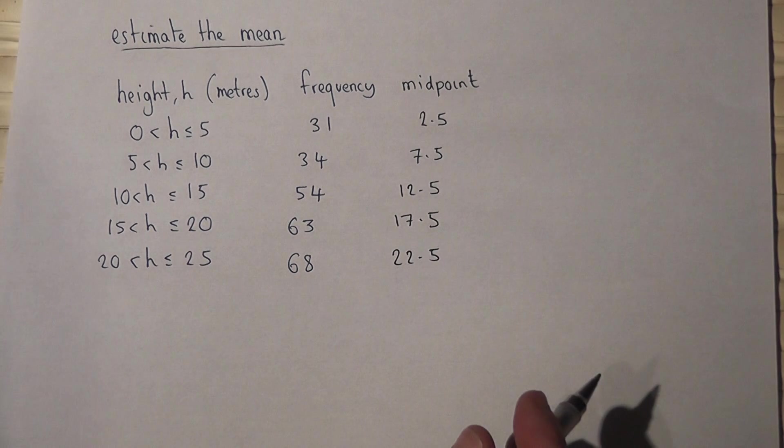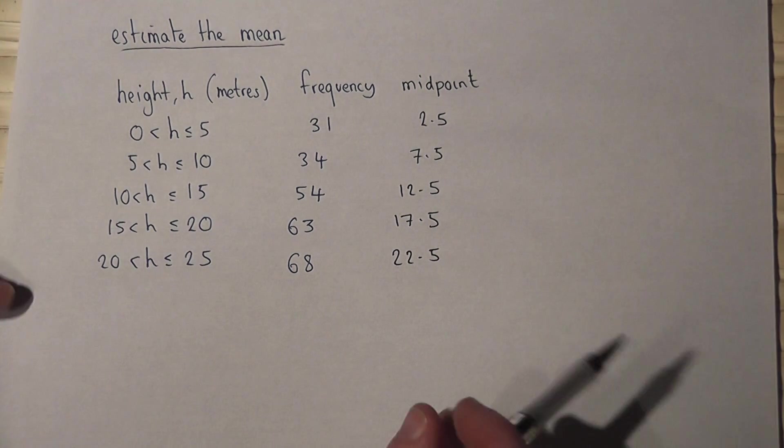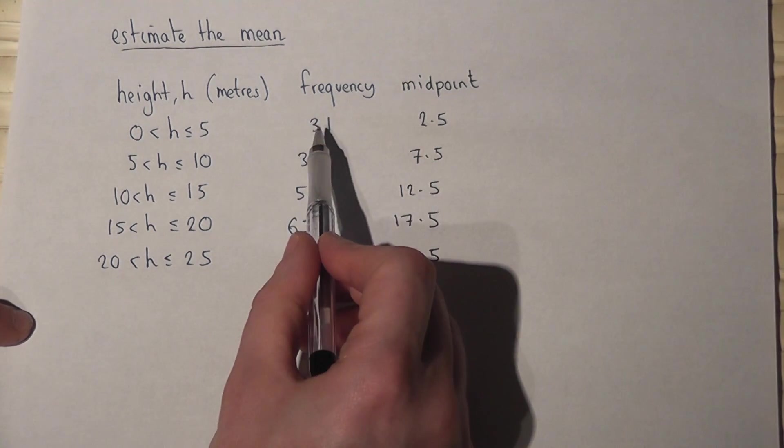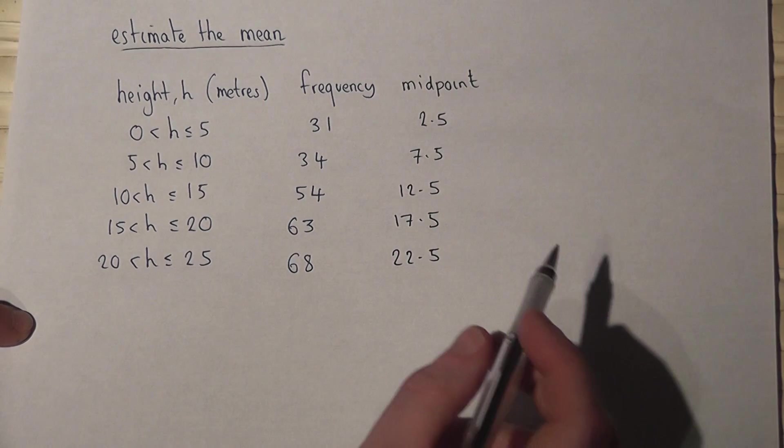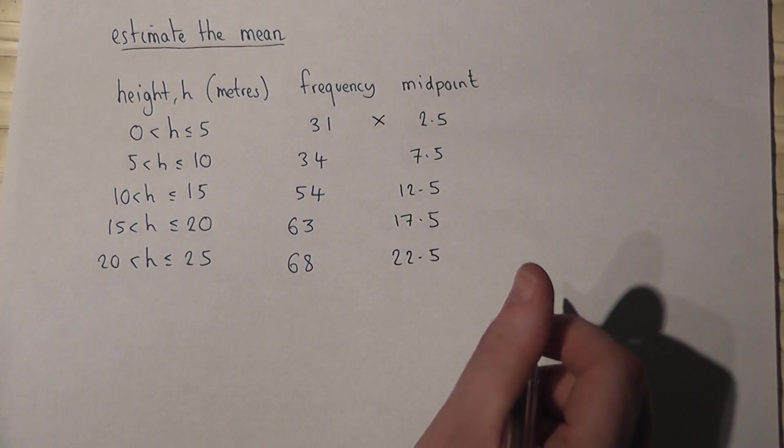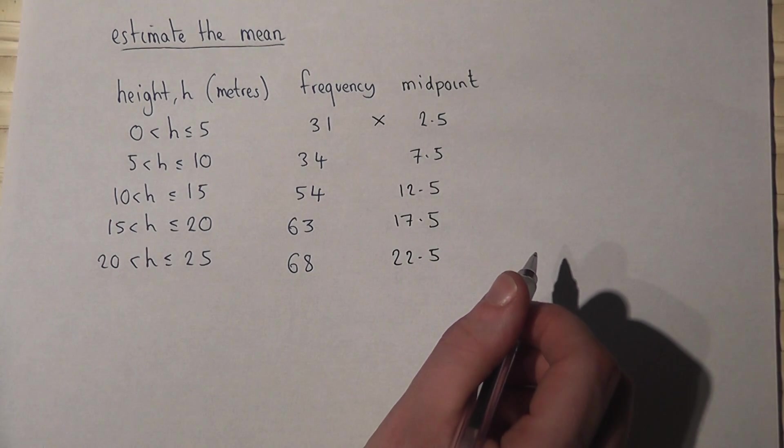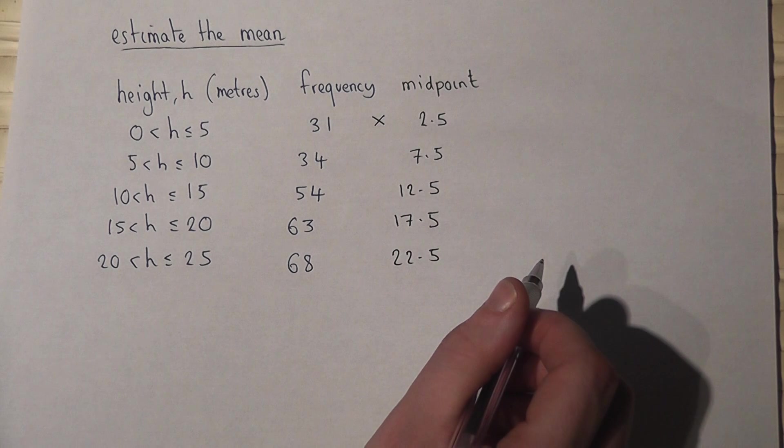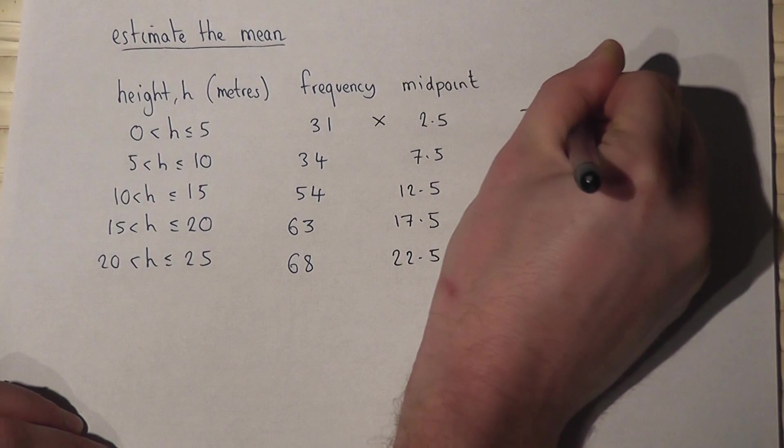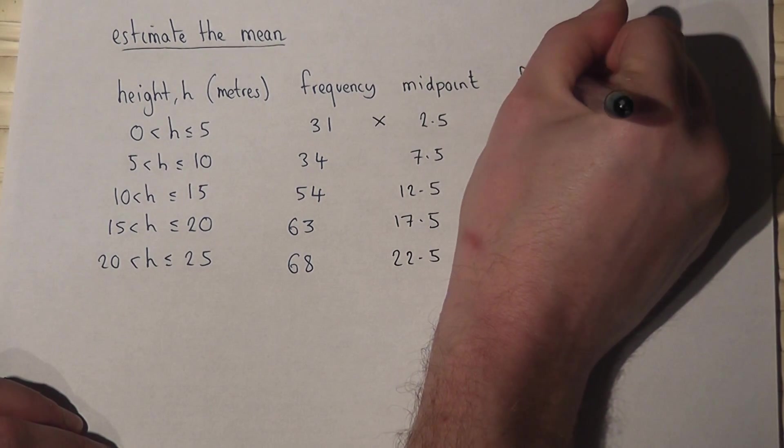To find the mean, we must add up all the heights of all the trees. However, we have 31 trees whose height is approximately 2.5. So to add the heights up, I must do 31 lots of 2.5 for those groups of trees. 31 times 2.5 is 77.5 metres. So I've done frequency times the midpoint.